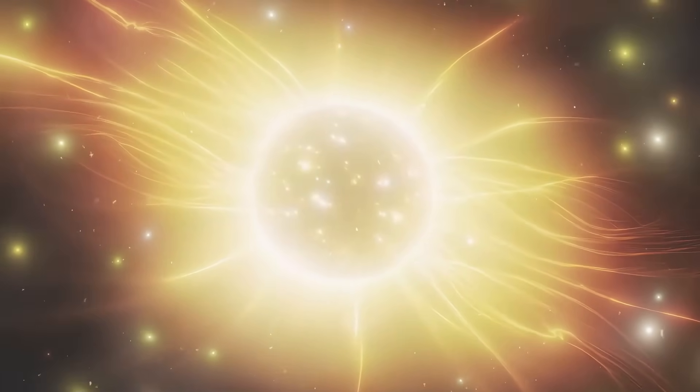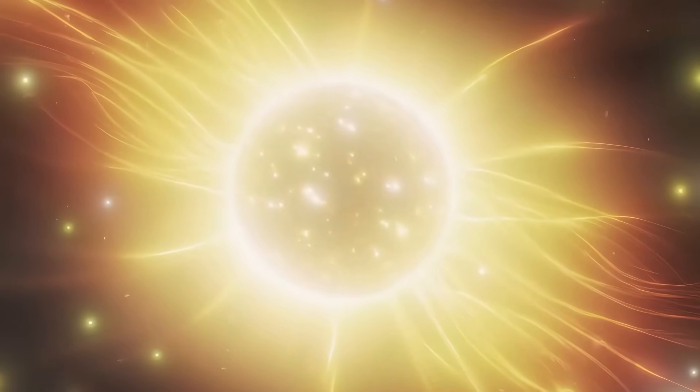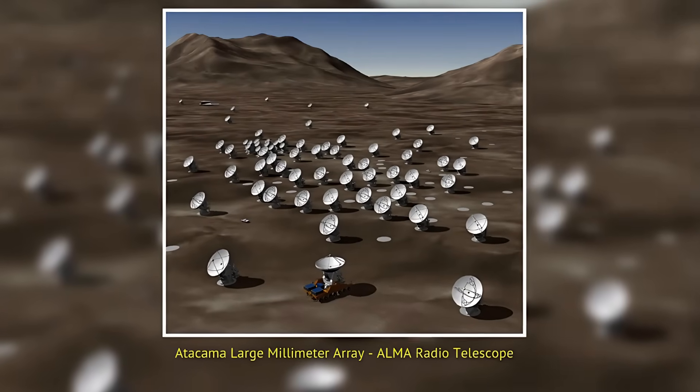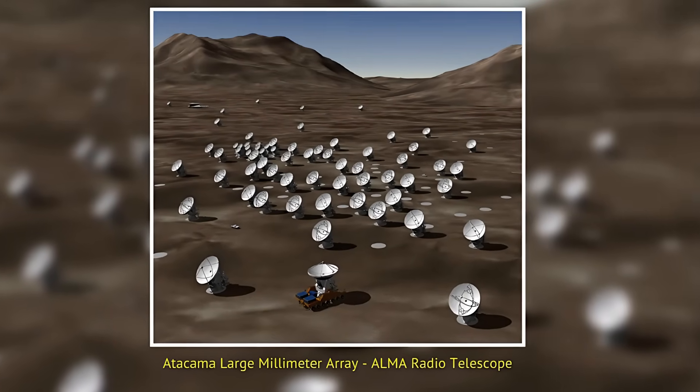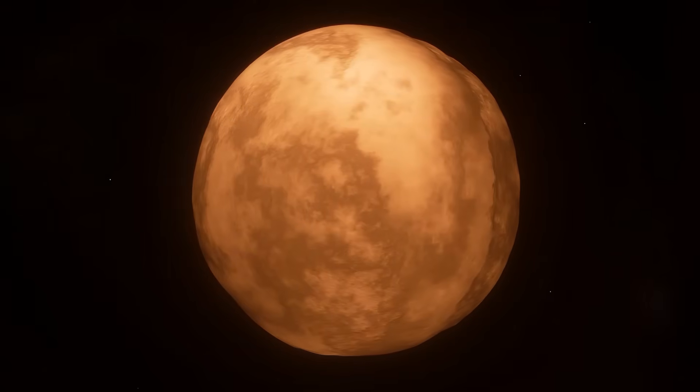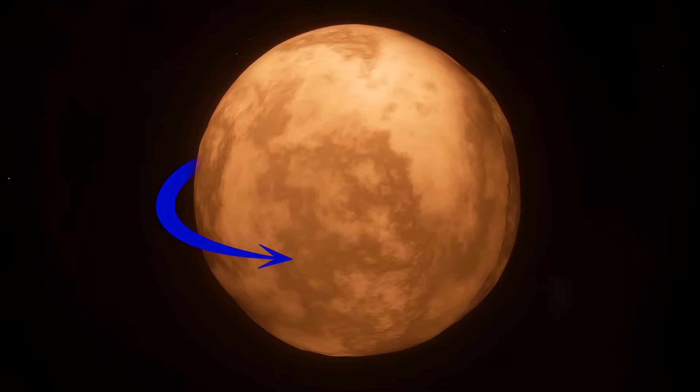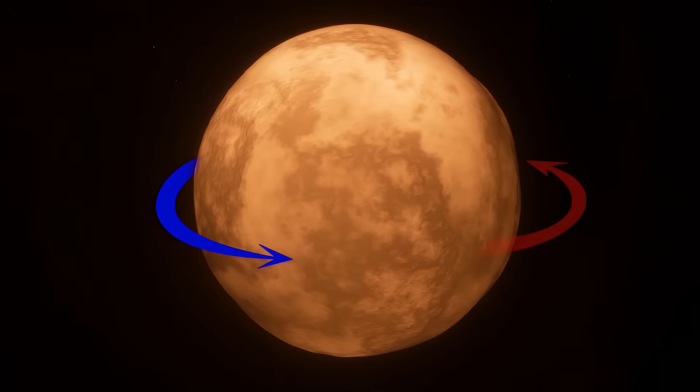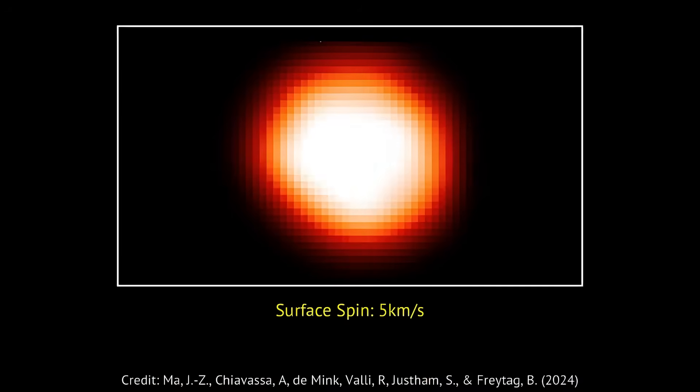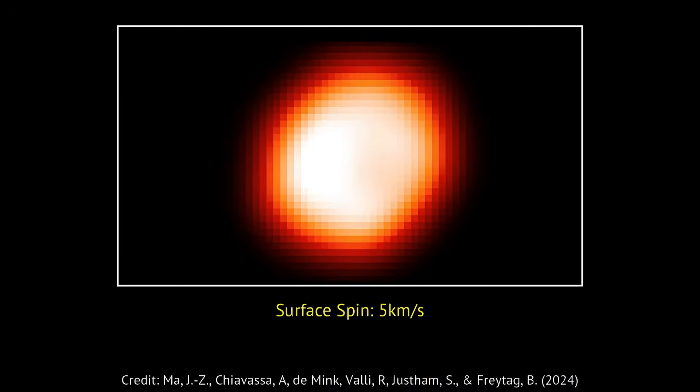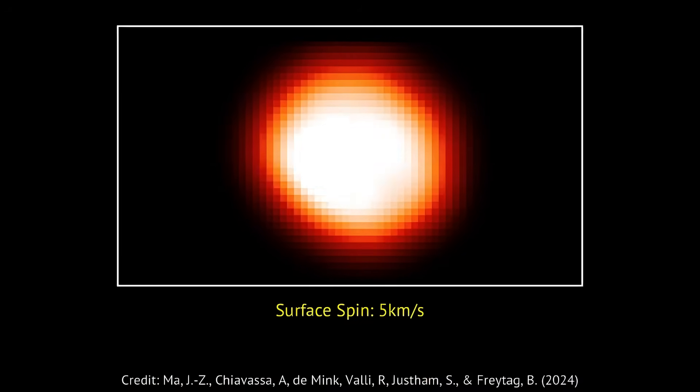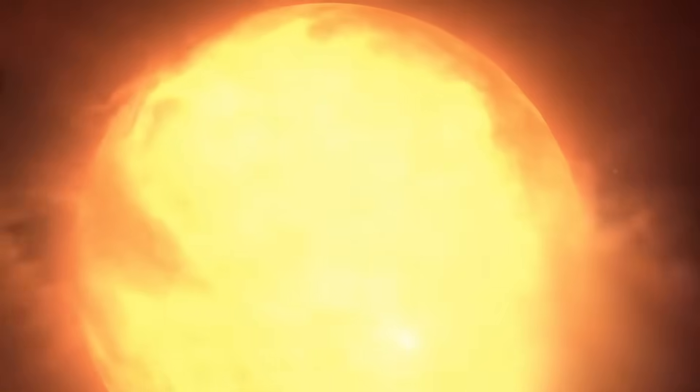One fascinating aspect of Betelgeuse is its rotation. Recent measurements using the ALMA array of telescopes revealed that Betelgeuse rotates at a surprisingly fast rate for a star of its size, about once every 20 years. This means its surface spins at roughly 18,000 km per hour, or 5 km per second, much faster than Earth's rotation. This rapid rotation is unusual for such a massive star and challenges our understanding of stellar physics.